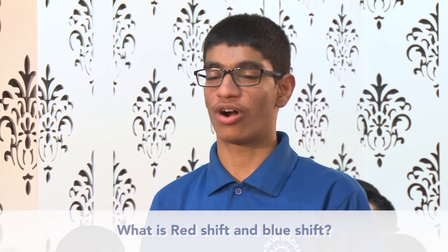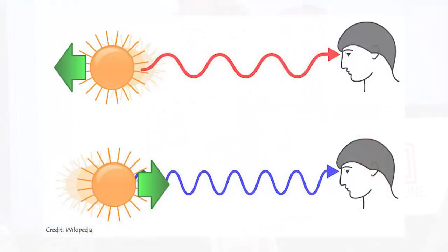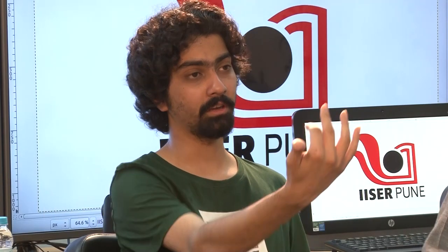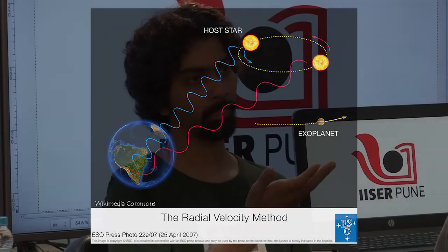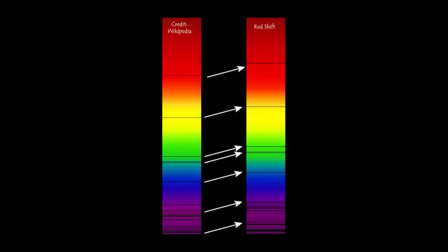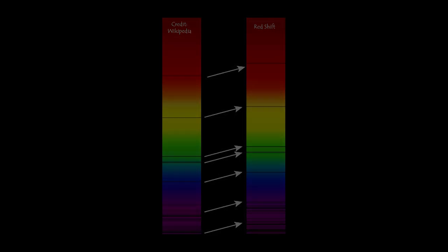What is redshift and blueshift? It's very similar to when you're standing on a highway and a car goes by — as it's coming towards you it's at a higher pitch, and as it's going away from you it's at a lower pitch. It's a very similar physical phenomenon, except with light. When an object is coming towards you and emitting light, the frequency appears higher, which means towards the blue end of the spectrum. When an object is moving away, the frequency appears lower — towards the redder side. So if something is moving away, the light is redshifted; if it's moving towards us, it's blueshifted.